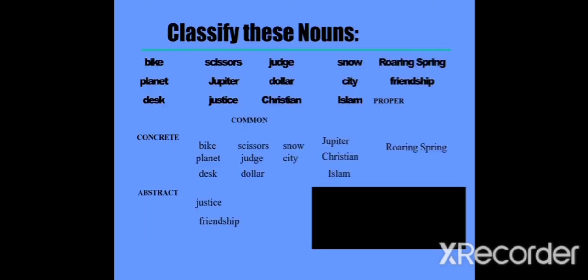Now let us classify these nouns. In the slide, you can see there are some nouns. You should classify them into common nouns, concrete nouns, abstract nouns and proper nouns. Bike is both a common and concrete noun — because you can see it and touch it, and no brand name has been given to it. Similarly, scissors, planet, desk, judge, dollar, city and snow are all common and concrete nouns. You can see them, you can touch them, and they are general names.